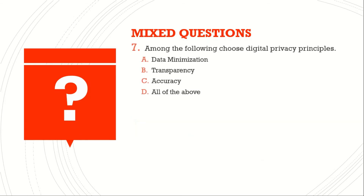Question number seven: Among the following, choose the digital privacy principles. Options: data minimization, transparency, accuracy, and all of the above. Answer: All of the above.